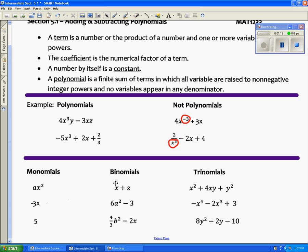Bi means two, two terms. A binomial—they're separated by an addition or subtraction sign, so therefore we have binomials.